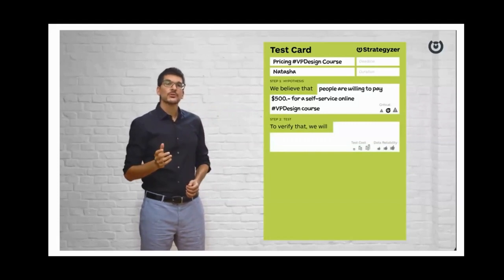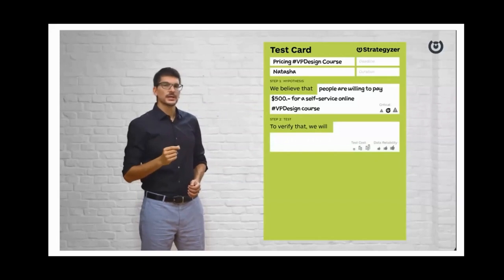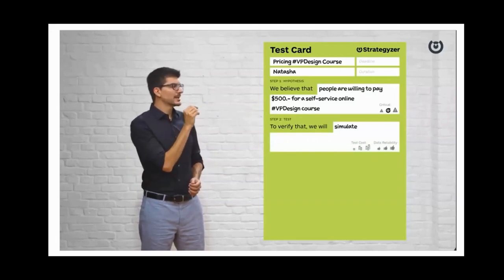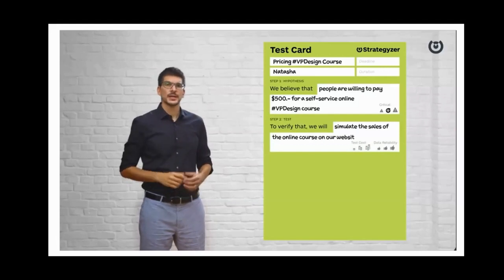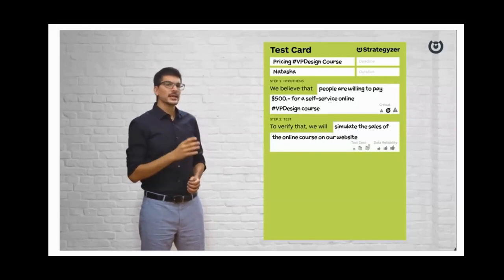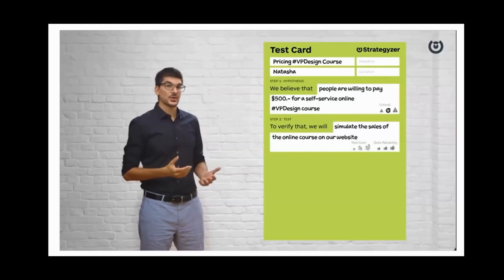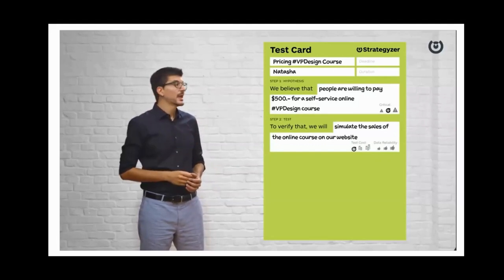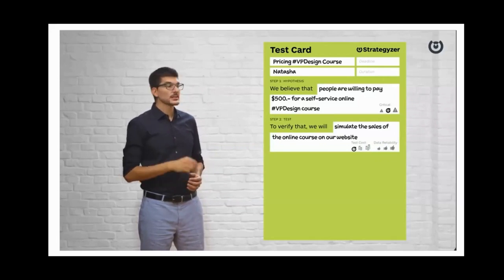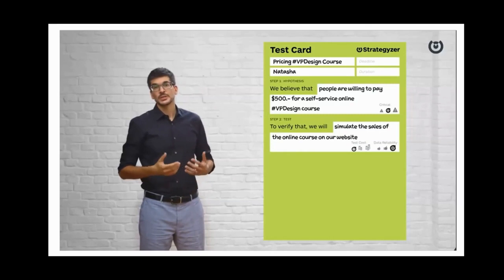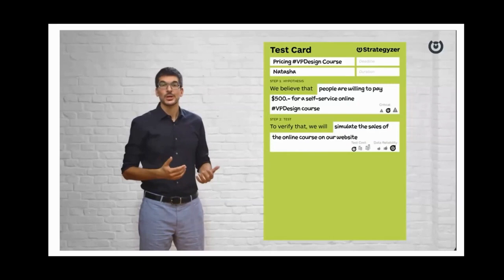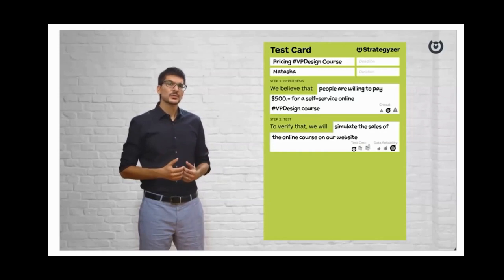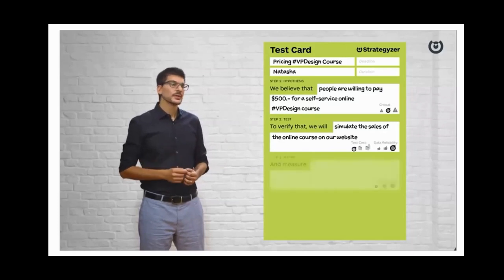For our example: we believe that people are willing to pay $500 for a self-service Value Proposition Design course. This is a hypothesis we wanted to test before filming the course. You also describe whether this is a critical test or not. In this case, before testing pricing, we of course tested whether people even wanted the course. Moving to the next block — the test itself — we describe what we're going to verify. In our case: to verify that, we will simulate the sales of the online course on our website.